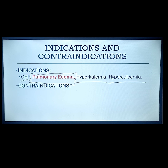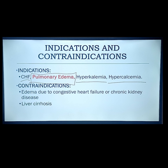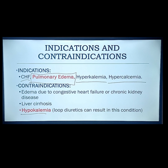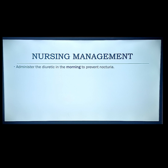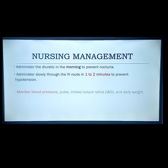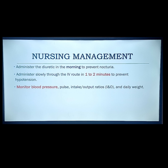Contraindications for furosemide or loop diuretics include edema due to chronic kidney disease, liver cirrhosis, and hypokalemia — if a patient is already suffering from hypokalemia, you need to give medications to address that. Nursing management: administer in the morning to prevent nocturia. Administer slowly via IV route over 1 to 2 minutes to prevent hypotension. Monitor blood pressure, pulse rate, and intake and output, plus weigh the patient daily.